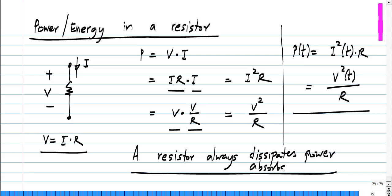The resistor always absorbs power, and where does it go? It gets dissipated in the form of heat. So if you pass current through a resistor, it will heat up. It absorbs power and actually dissipates it — the power goes into heating up the resistor. In fact, that principle is used for many useful gadgets. If you have an electric stove, you pass current through the coil which is really a resistor, and the resistance value has been adjusted so that the amount of power heats it up to a certain extent, which is useful for cooking or something like that.